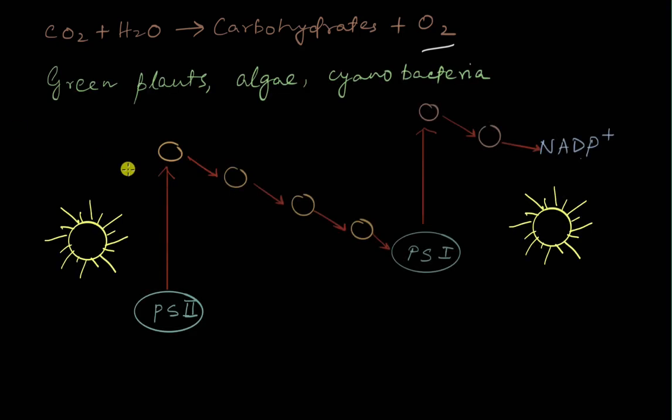We know that in green plants and algae and cyanobacteria, in the light reactions there are these things called photosystems, photosystem 1 and photosystem 2.